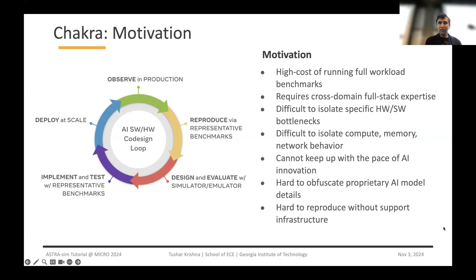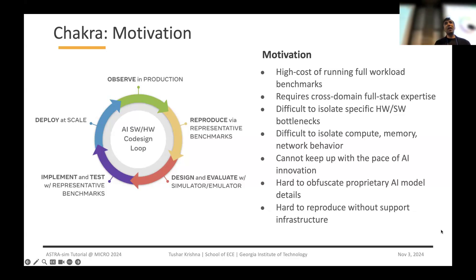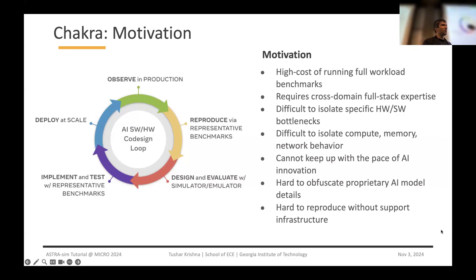One of the big challenges is that there is a big cost for running full workload benchmarks. Today you're requiring tens or hundreds of GPUs just to deploy models, making it extremely prohibitive to run full workload benchmarks. Only a handful of companies have systems at that scale, and even in those companies it's very hard to get access to those systems all the time. You also often require a lot of cross-domain full-stack expertise — it's one thing to push a button and run a model, but you really need to optimize different parts of the stack for efficiency. It's also very difficult to isolate specific bottlenecks: was it a hardware or software challenge, an issue with compute, memory, or network?